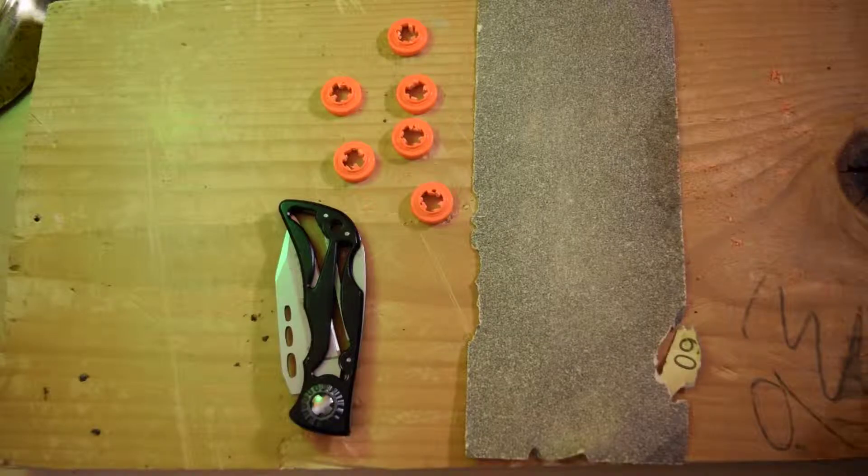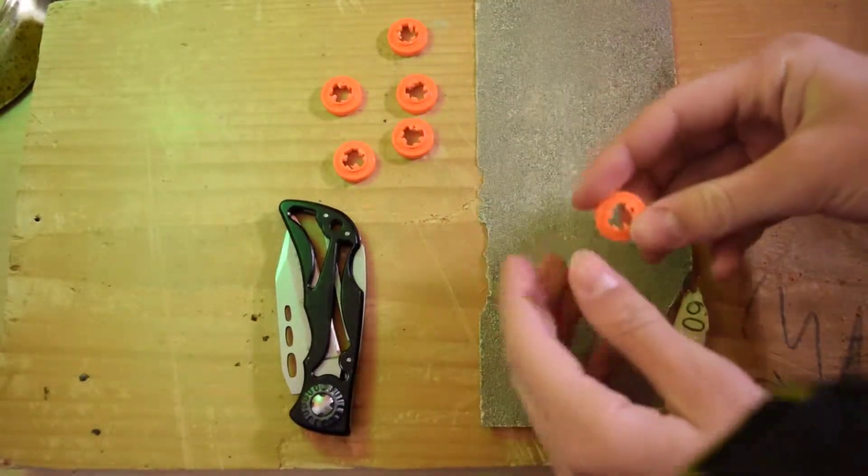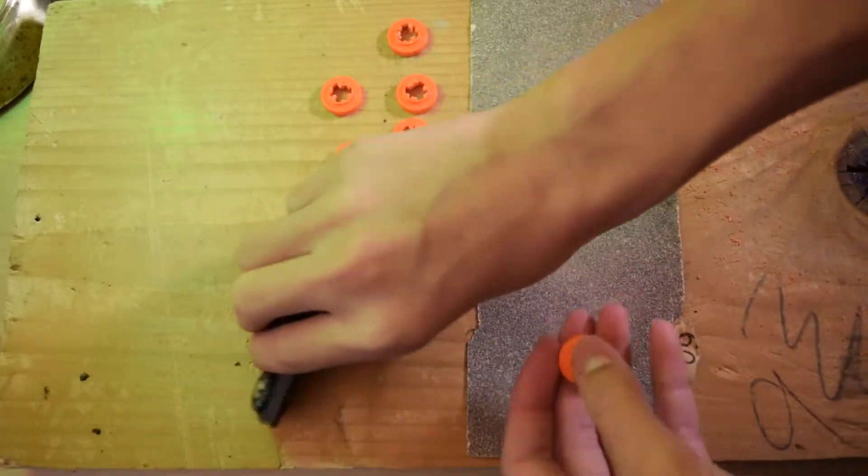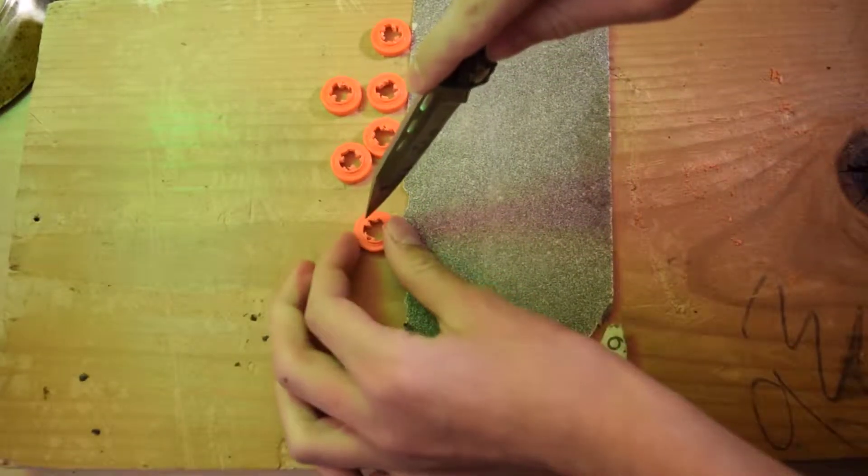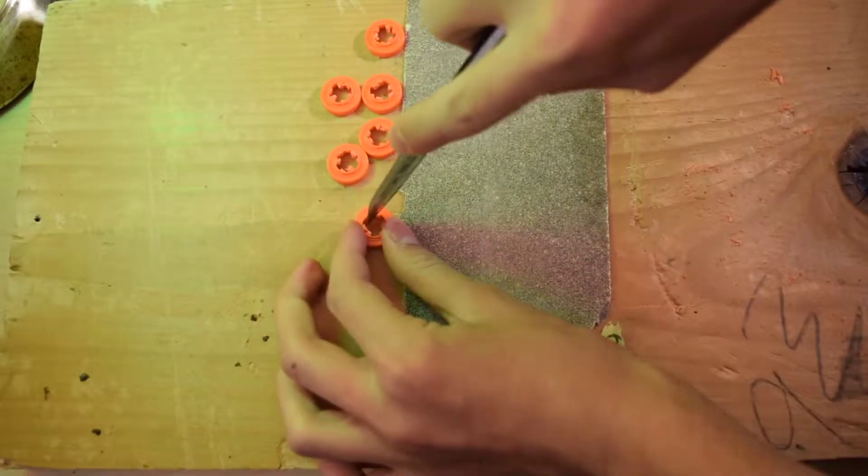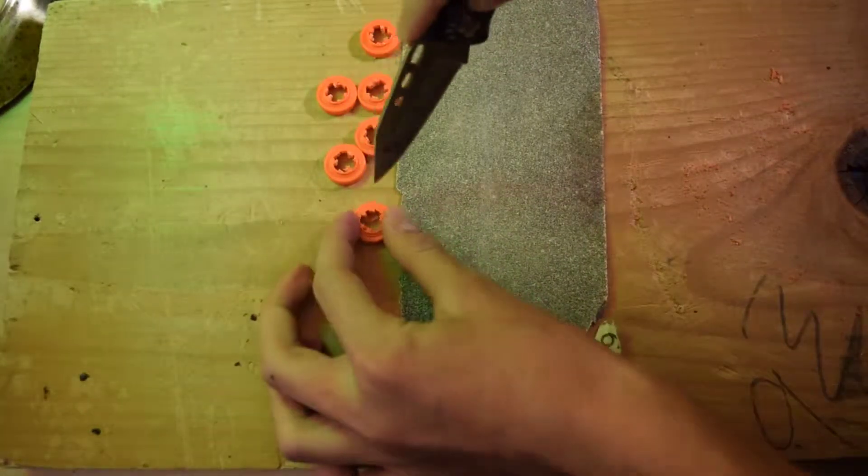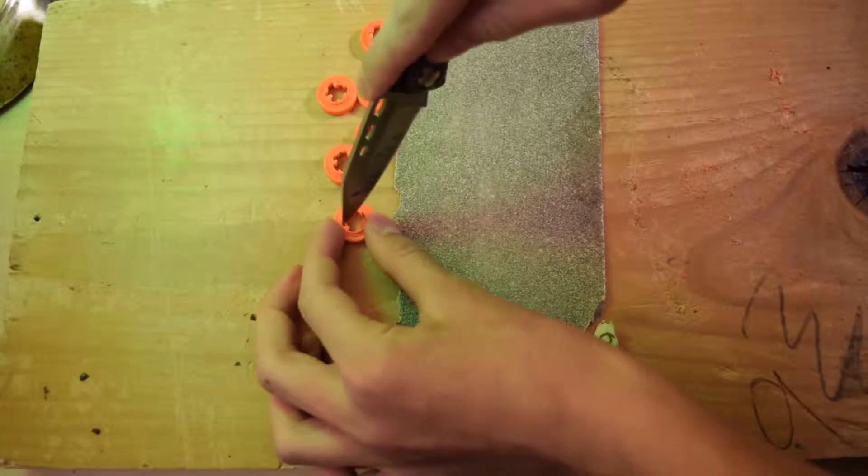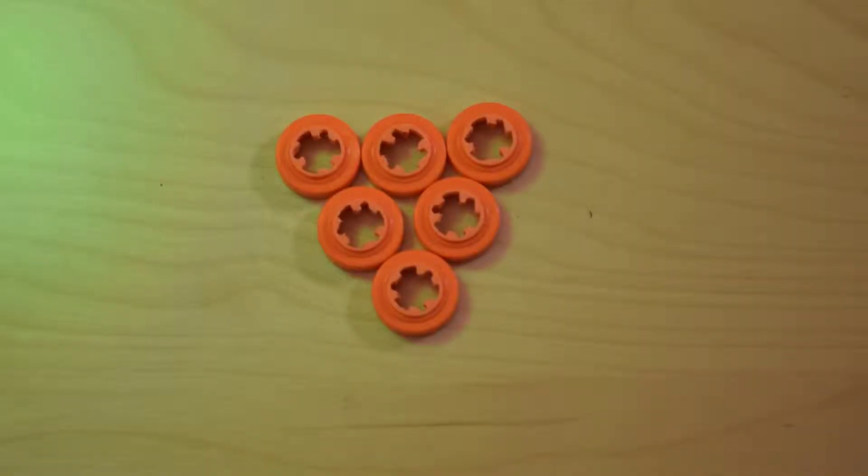Once you've removed all the dart posts, you just need to clean up these little plastic bits that are left. So using your sandpaper and your knife, just kind of clean them up as best you can. Make sure you have some kind of surface underneath that you don't mind getting cut while you do this because you don't want to scratch up a nice table or something.